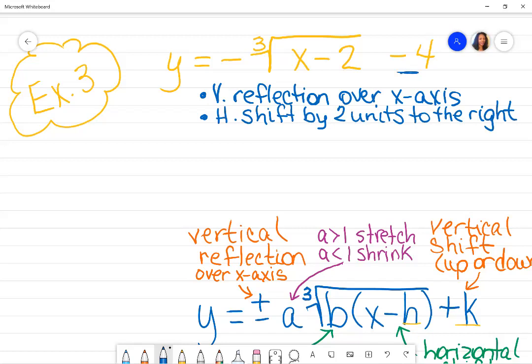And then finally we have K. And if I look at the sign, I see that it's going down because it's negative and it's outside of the radical. So it's vertical. So there's a vertical shift down by four units.